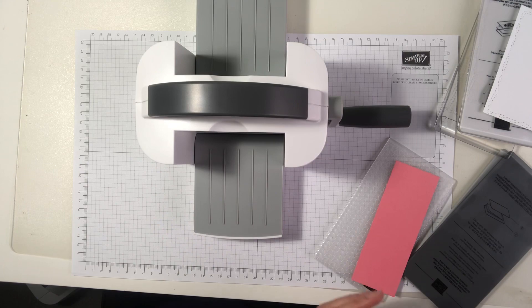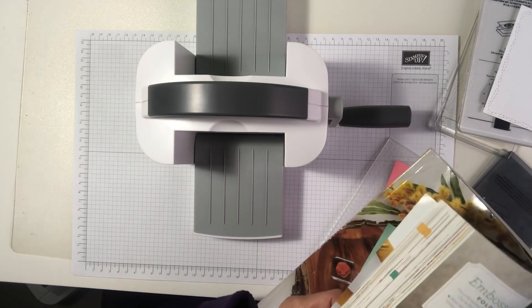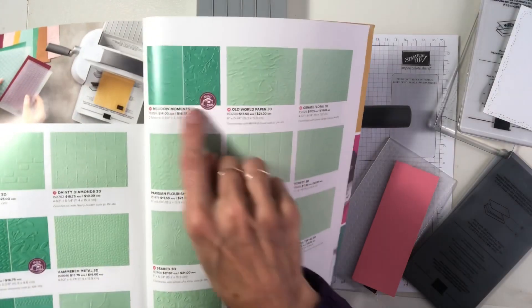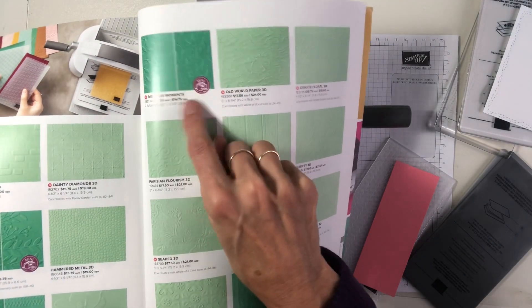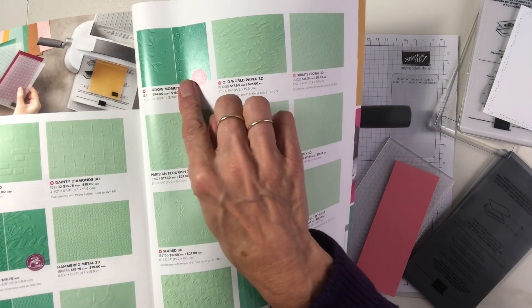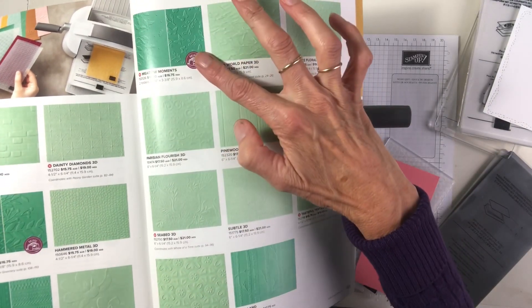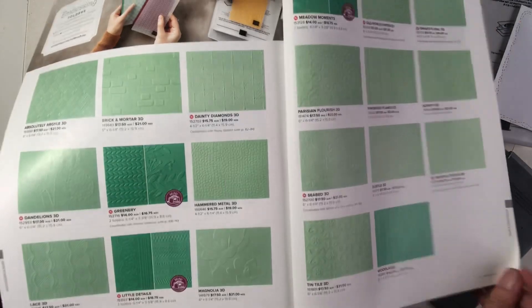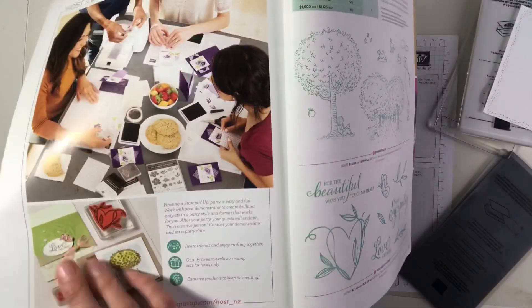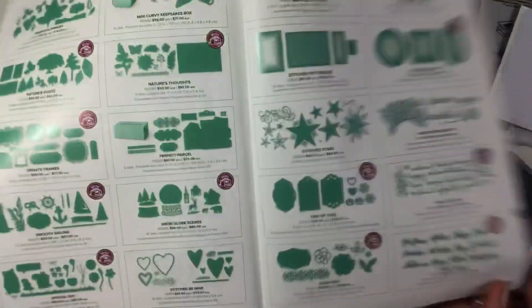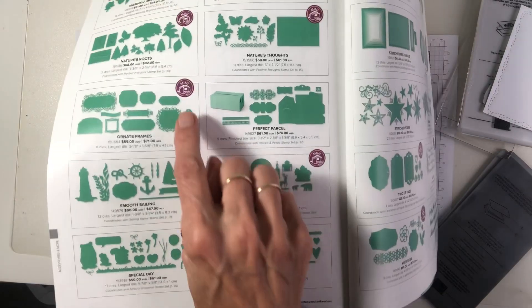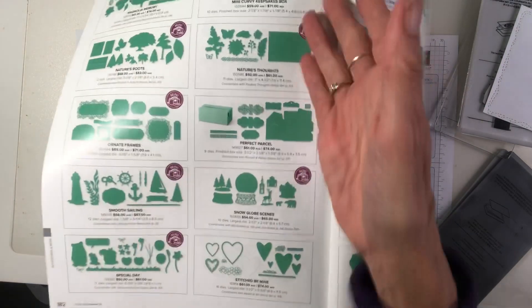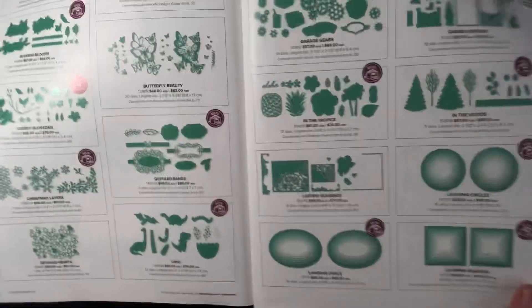Just if we have a look at the catalogue you'll notice in the catalogue under the embossing folders it'll have that little emblem there. That will indicate that these embossing folders are suitable to run through your machine. There's a few and they come in pairs which is quite a good price. If you have a look at the dies that also indicates that those dies will go through the mini embossing machine. So it does cater for a lot of the dies.